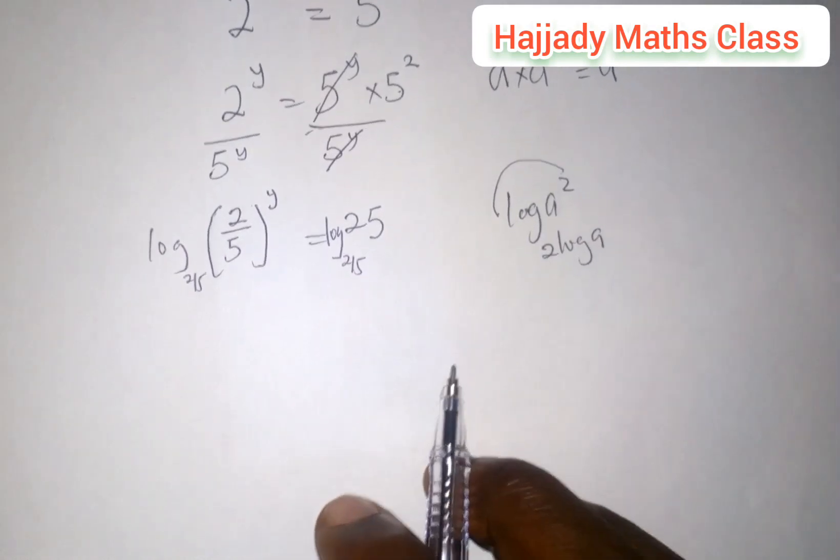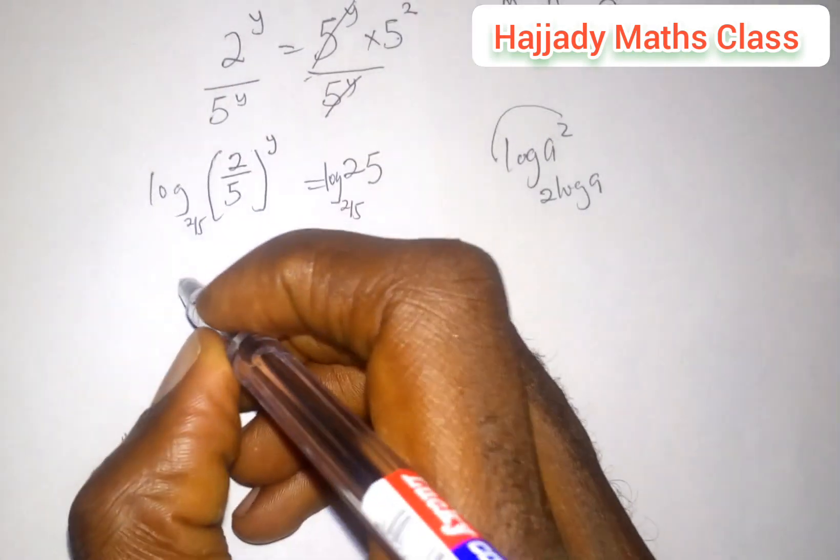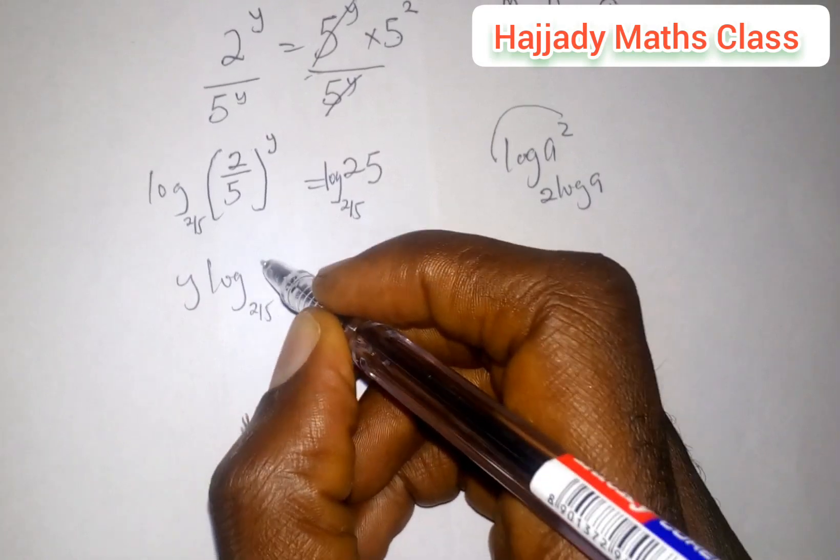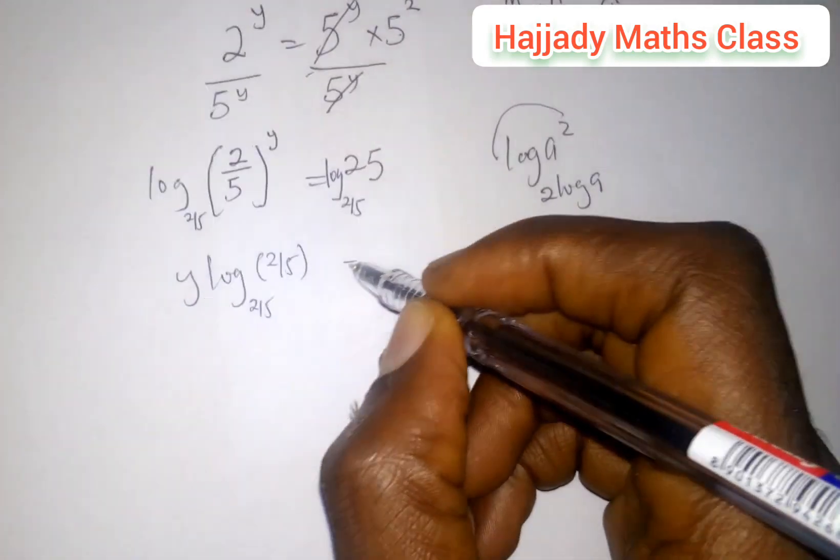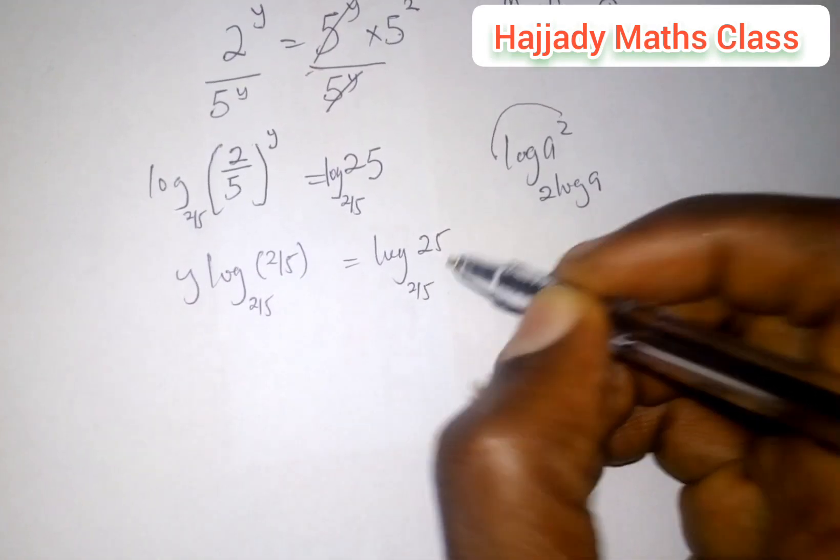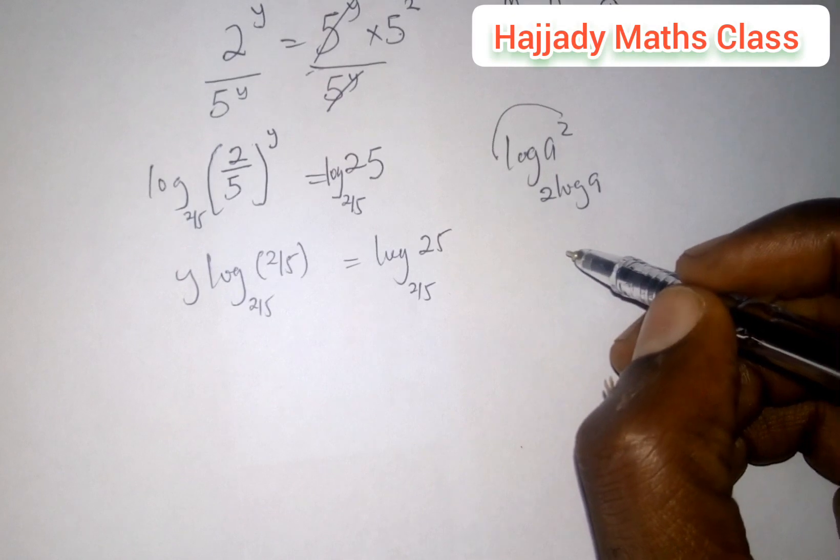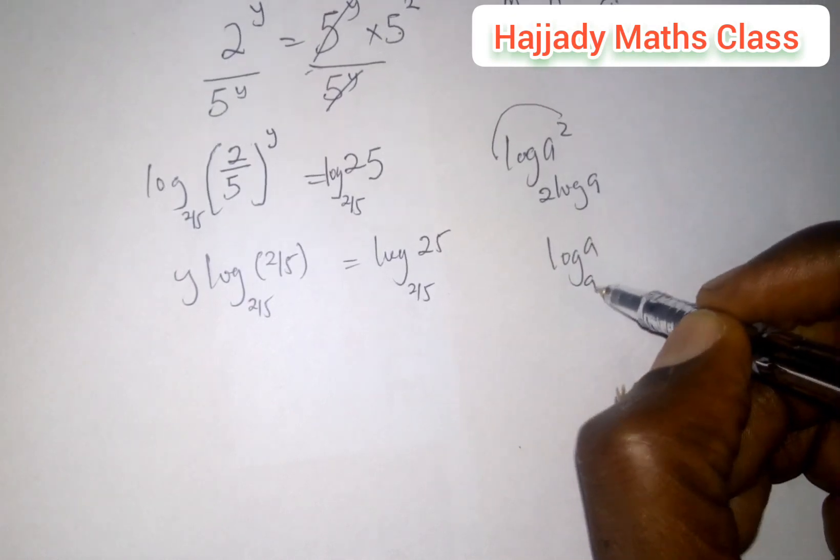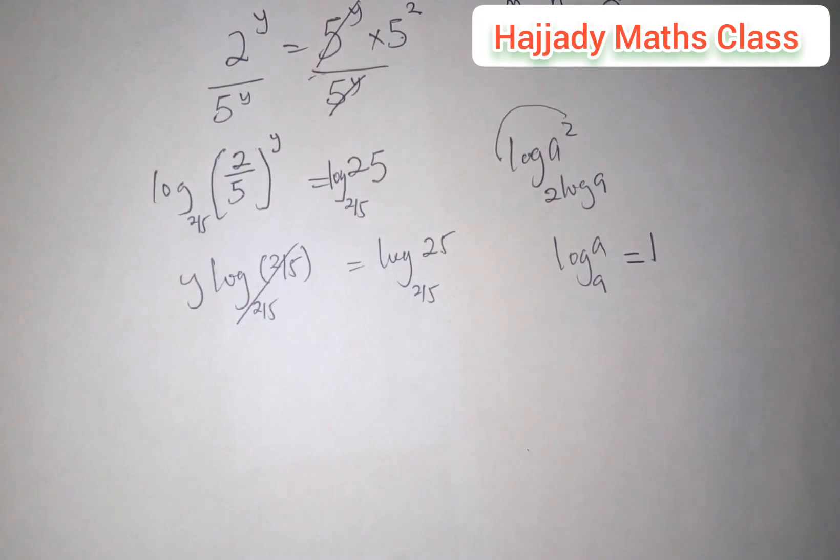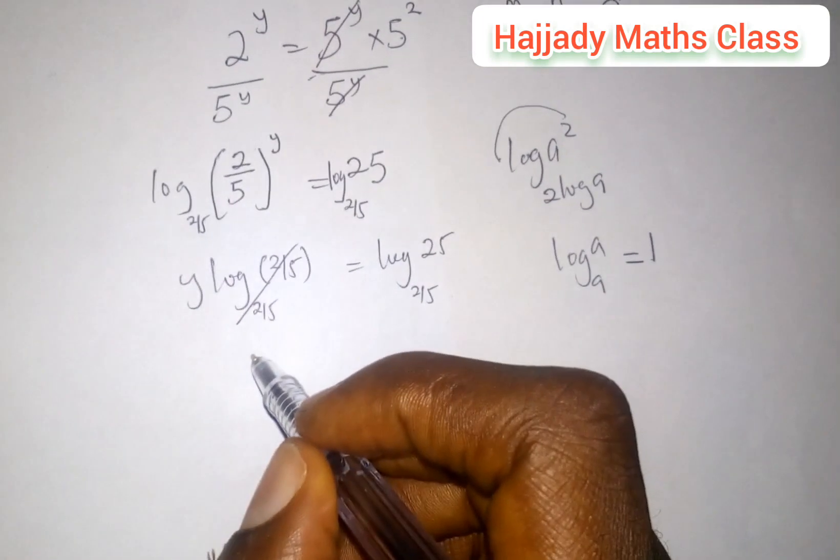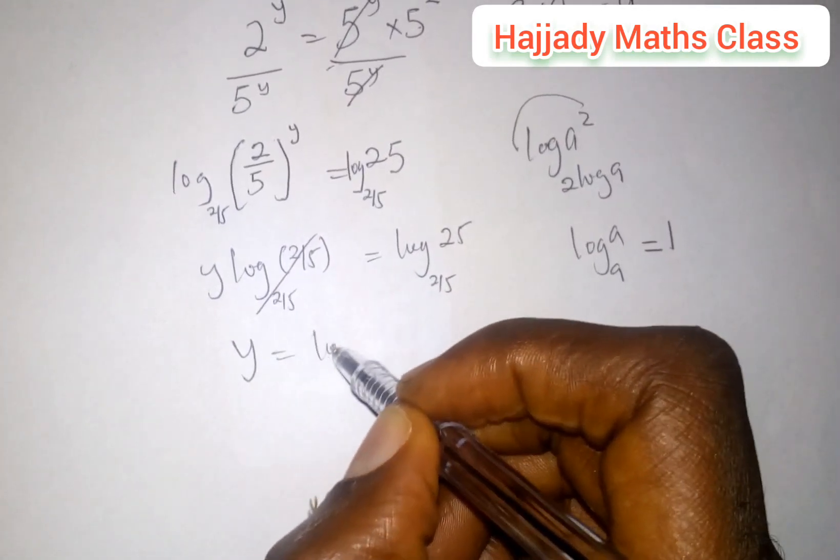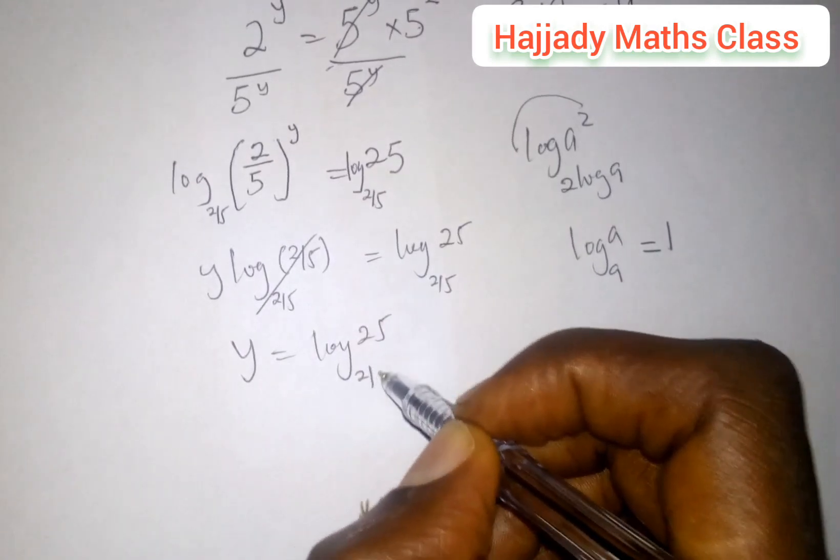With this, we have y log 2 over 5 into base 2 over 5 equals log 25 into base 2 over 5. Another rule of logarithms says if you have log a into base a, it is equal to 1. That means this is being cancelled out, which is equivalent to 1. So on the left hand side, we are left with only y equals log 25 base 2 over 5.